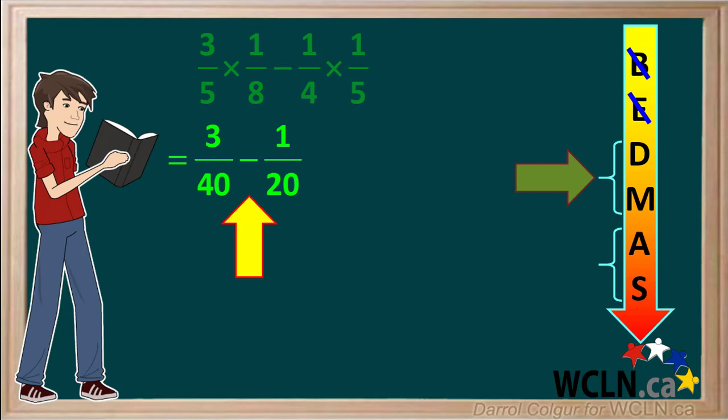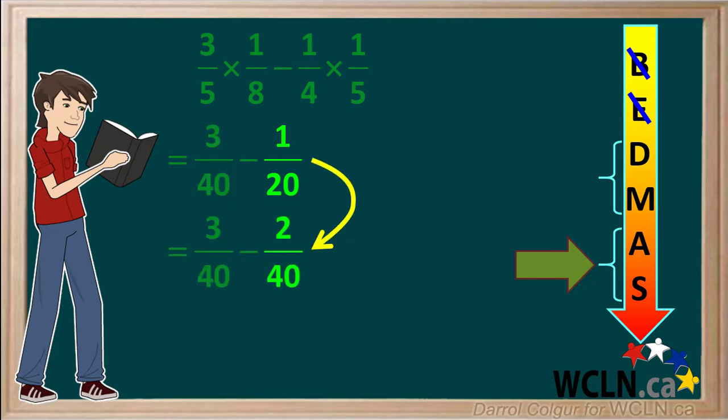The question now is three-fortieths minus one-twentieth. There is no more multiplication or division, so we move down to addition and subtraction. The question is a subtraction, three-fortieths minus one-twentieth. When adding or subtracting, we must have a common denominator. The fraction one-twentieth is the same as two-fortieths. So our question is now three-fortieths minus two-fortieths, which is one-fortieth. This is the final answer to our question.